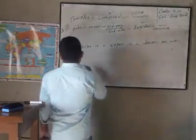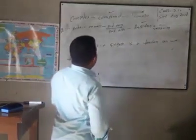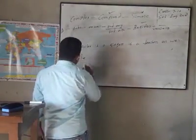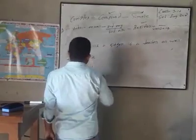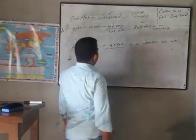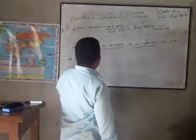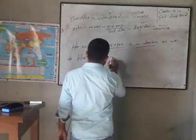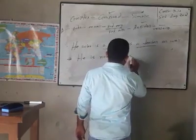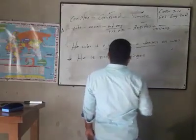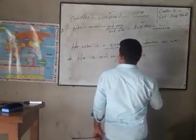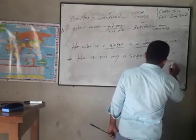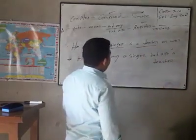This is our complex sentence. Now we have to make it a compound sentence. First use the subject, then the verb: 'he is.' Look, here is a noun, and there is another noun. So before the first noun you have to use 'not only,' and before the next noun you use 'but also.' So: 'He is not only a singer but also a teacher.'